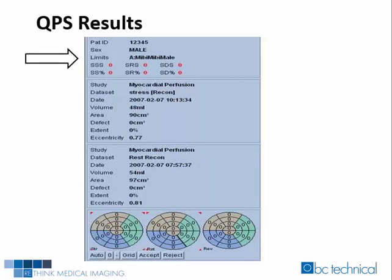The black arrow points out the quantitative scoring we are tracking. One last point that we cannot overlook are the limits — the datasets that will be used to calculate the patient's scoring. In CEDARS QPS, we have a choice of MIBI MIBI or SEPT DUAL. Whether the patient was acquired with Cardiolite or MyoView, for both scans use the MIBI MIBI limit. If thallium was used for the rest, then select SEPT DUAL. There is no limit for thallium used for both rest and stress imaging sets.